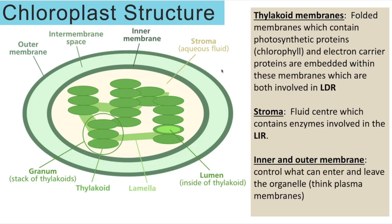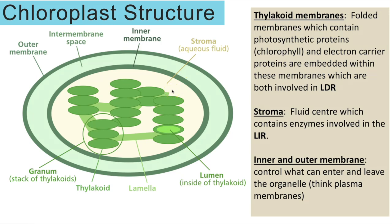Topic 13 is all about photosynthesis and we start by looking at the structure of a chloroplast, which is where photosynthesis happens. You should have some idea already about the thylakoid membranes, which are folded to make these disc-like stacks called the grana. The thylakoid membranes are where you have lots of proteins embedded, which is going to be the site of chemiosmosis in the light-dependent reactions. The stroma is this fluid-filled centre, which is the location of the light-independent reactions, and there are lots of enzymes in the stroma for catalyzing those reactions.